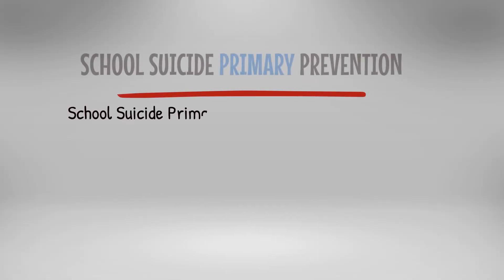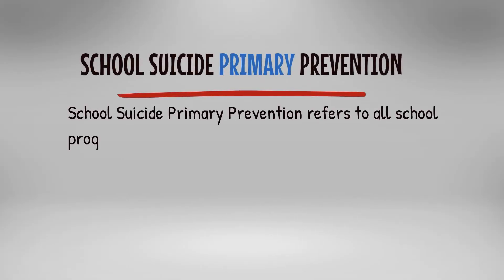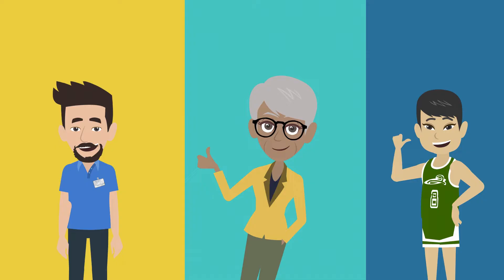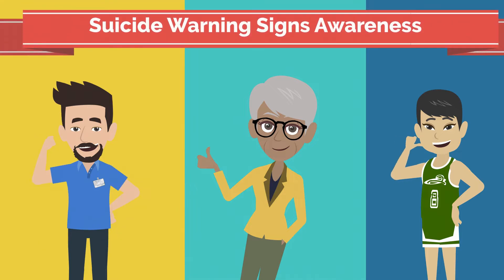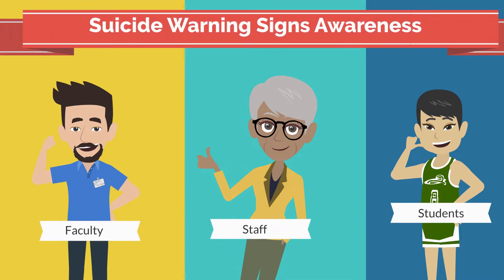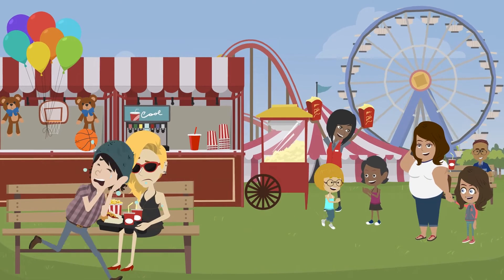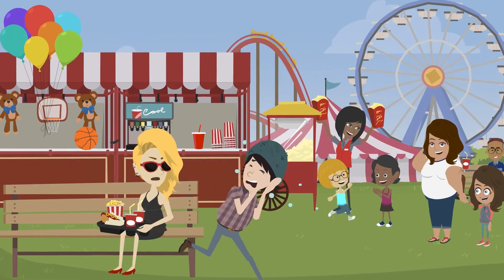School Suicide Primary Prevention refers to all school programs and activities aimed at preventing student suicide thoughts, attempts, and completions. These activities focus on raising faculty, staff, and student awareness of suicide warning signs, risk factors, and referral steps.